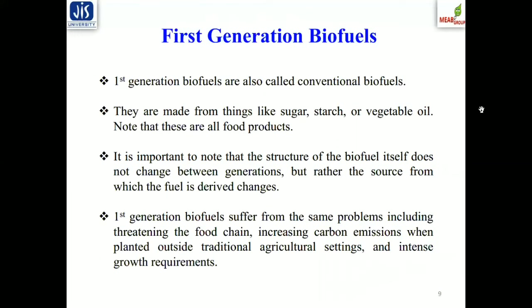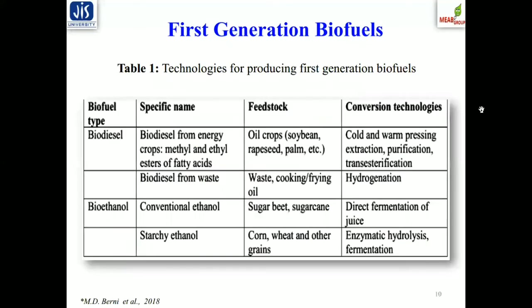First generation biofuels, also called conventional biofuels, are made from things like sugar, starch, and vegetable oil — all coming from food products, thereby competing with our food chain and food ecosystem. It is important to note that the structure of the biofuel itself does not alter between generations, but rather the source from which the fuel is derived. First generation biofuels suffer from pitfalls including threatening the food chain, elevated carbon emissions when burned outside traditional agricultural settings, and intense growth requirements.